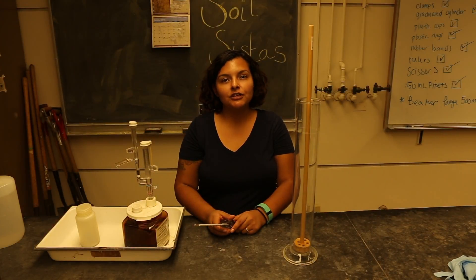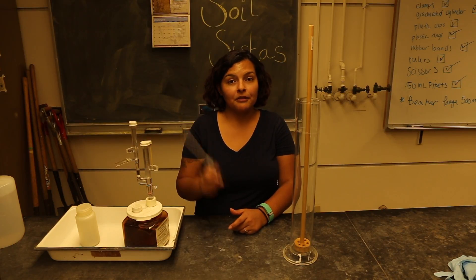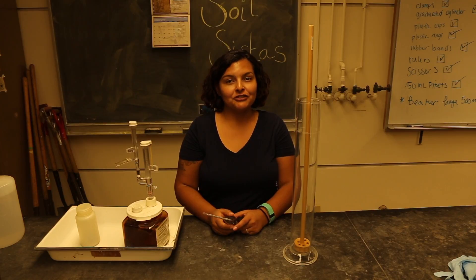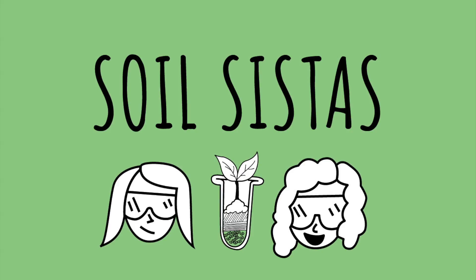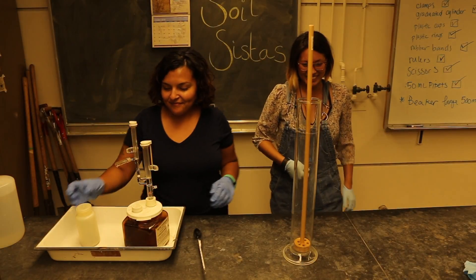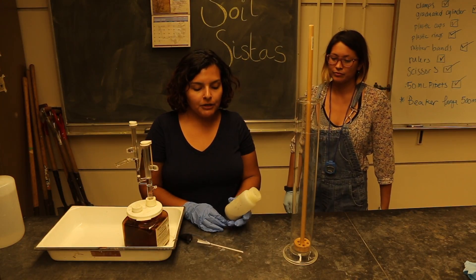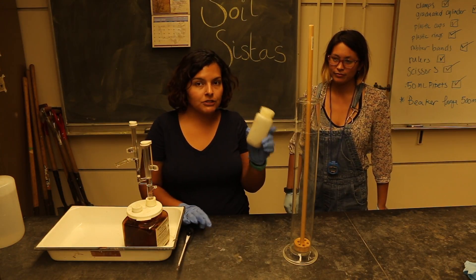This week we covered particle size distribution and used a hydrometer method to determine the texture of our soils. What you did in lab this week is put 50 grams of soil into a shaking jar.